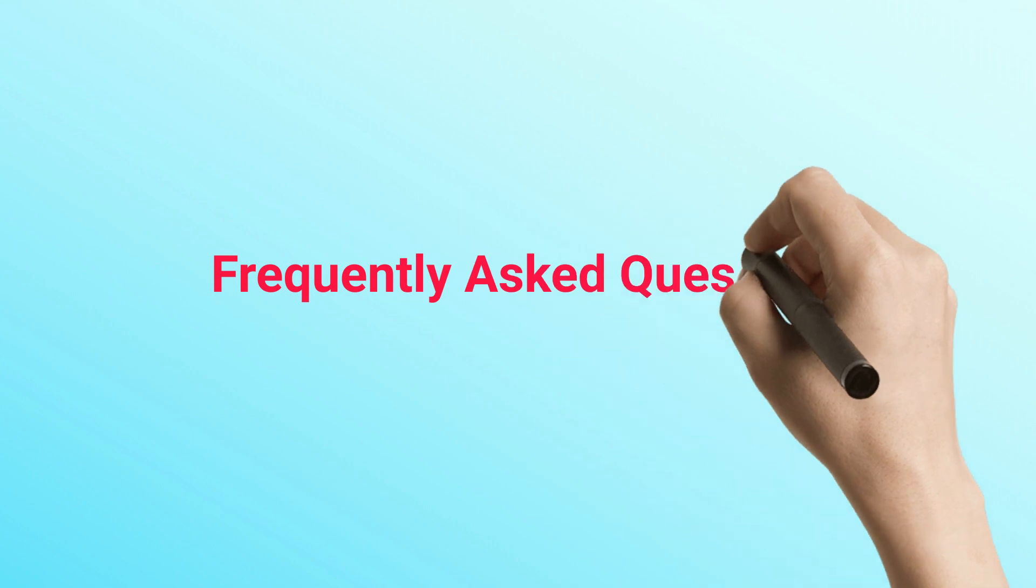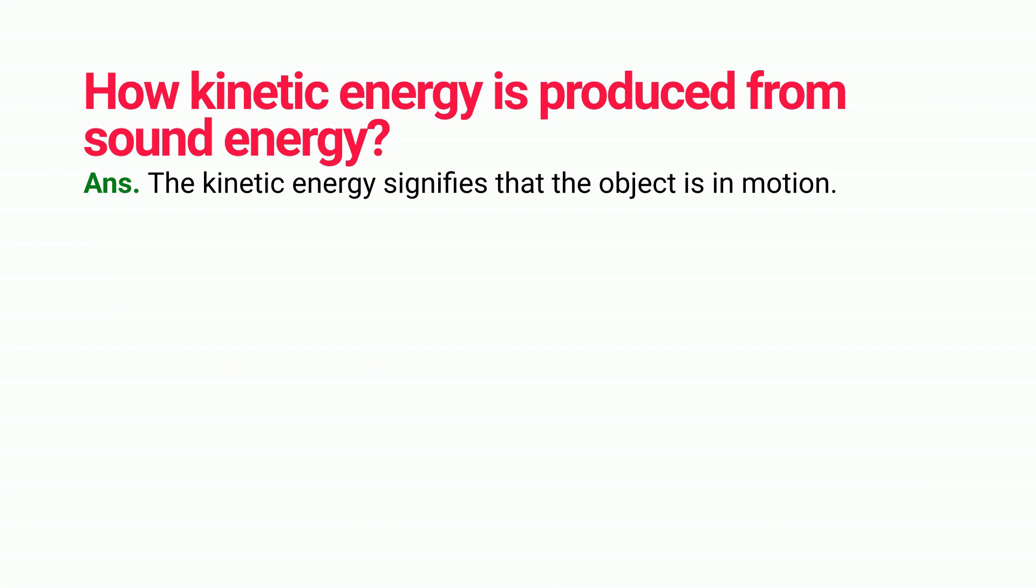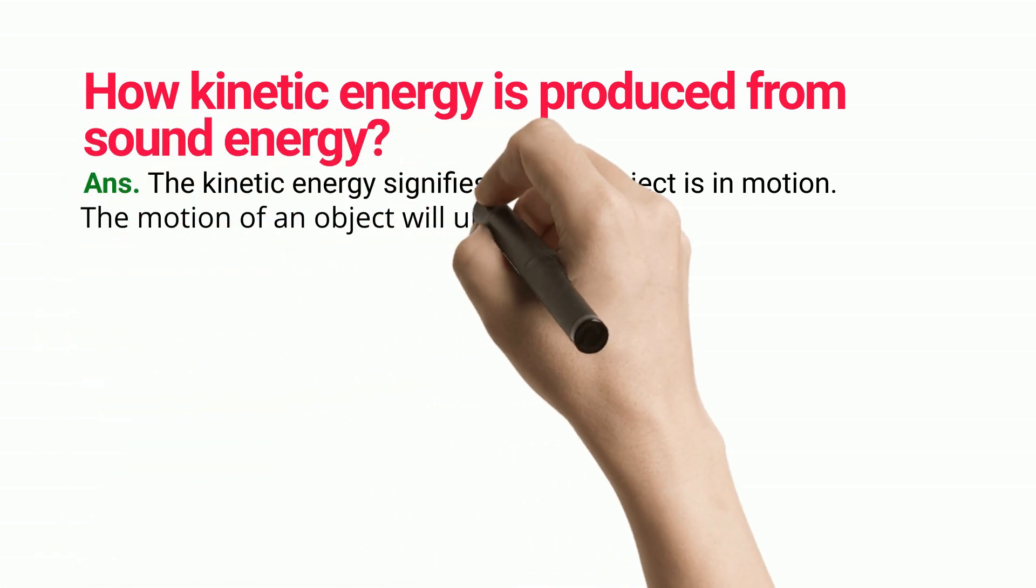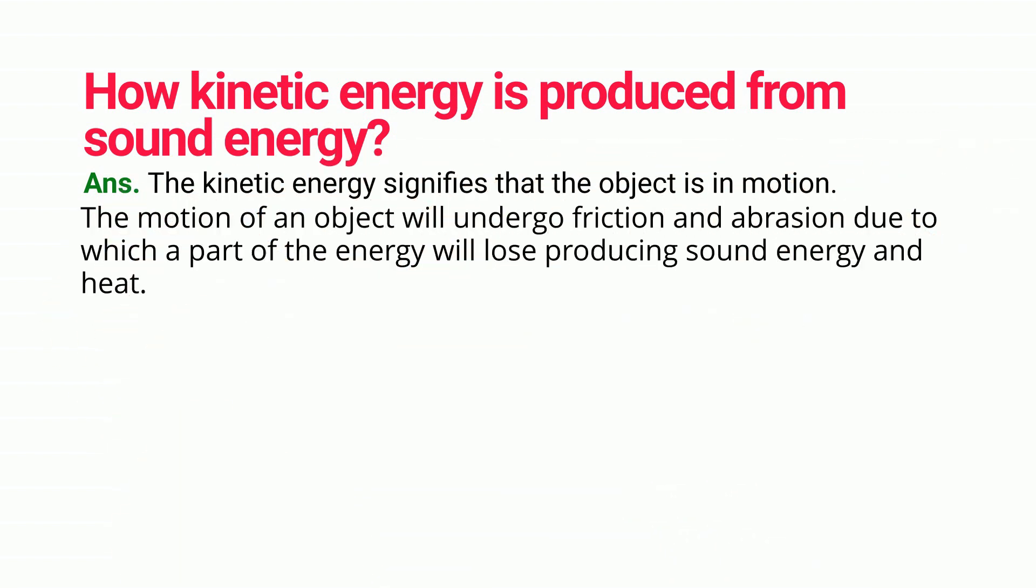Frequently asked questions. How kinetic energy is produced from sound energy. The kinetic energy signifies that the object is in motion. The motion of an object will undergo friction and abrasion due to which a part of the energy will lose, producing sound energy and heat.